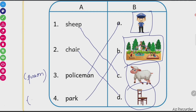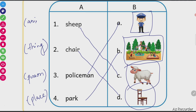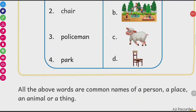Park is a place where kids go to play and elders go for a walk. Chair is a thing on which we sit. Sheep is an animal. So these are common names for place, person, thing and animal. All of these words are common names for a person, place, an animal or a thing.